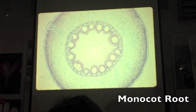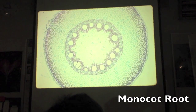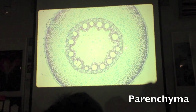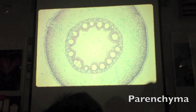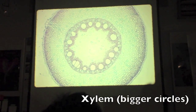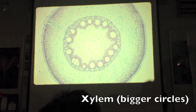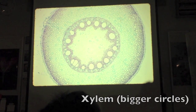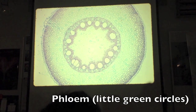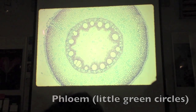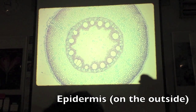Another root — this is a monocot root. And again, most of it is parenchyma. Parenchyma here, big ones through xylem, a little green one for phloem, epidermis on the outside.